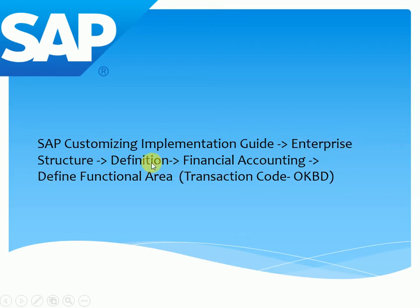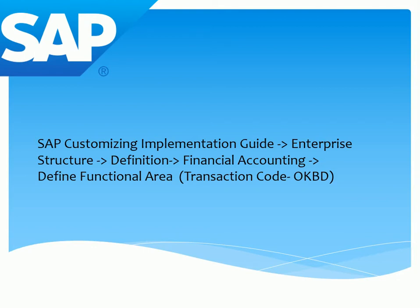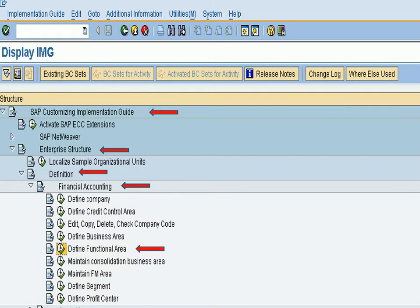From Display IMG, we follow the menu path: SAP Customizing Implementation Guide → Enterprise Structure → Definition → Financial Accounting → Define Functional Area. The transaction code is OKBD.